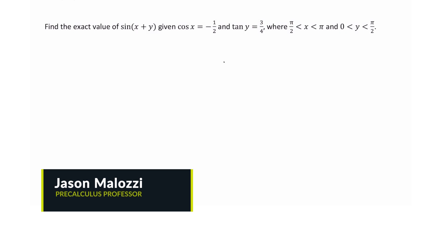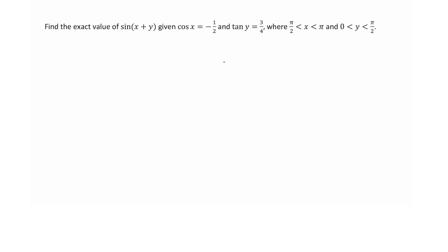Hello there, and welcome back. What we're going to do in this video is find the exact value of sine of the sum of angles x and y, given cosine x is negative one-half and tangent of y is three-fourths.